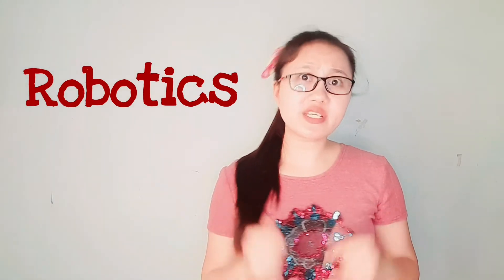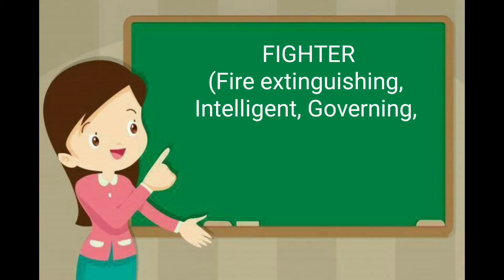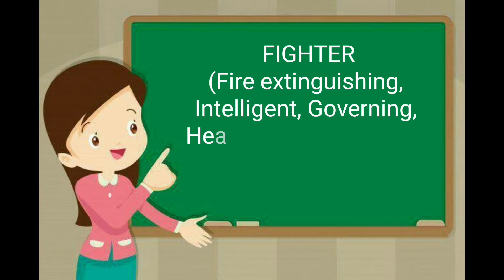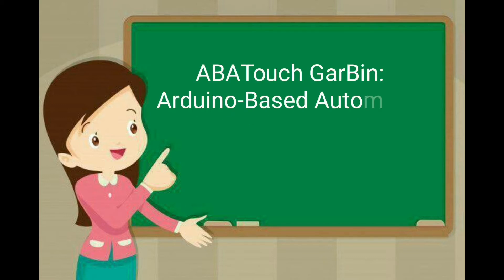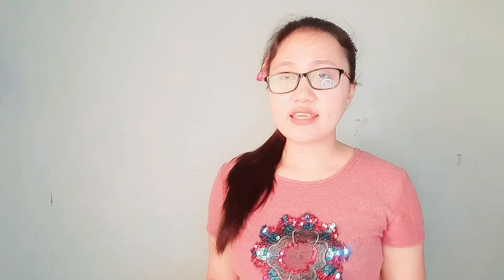Number three is robotics. From the word itself — robot — robotics is the interdisciplinary science and engineering field dedicated to building, designing, and using mechanical robots. Examples of science investigatory projects under the robotics category include a fire-extinguishing, intelligent, heat-sensing, two-way mode, obstacle-evading robot, and ABBA Touch Garbin — an Arduino-based automated touchless garbage bin.